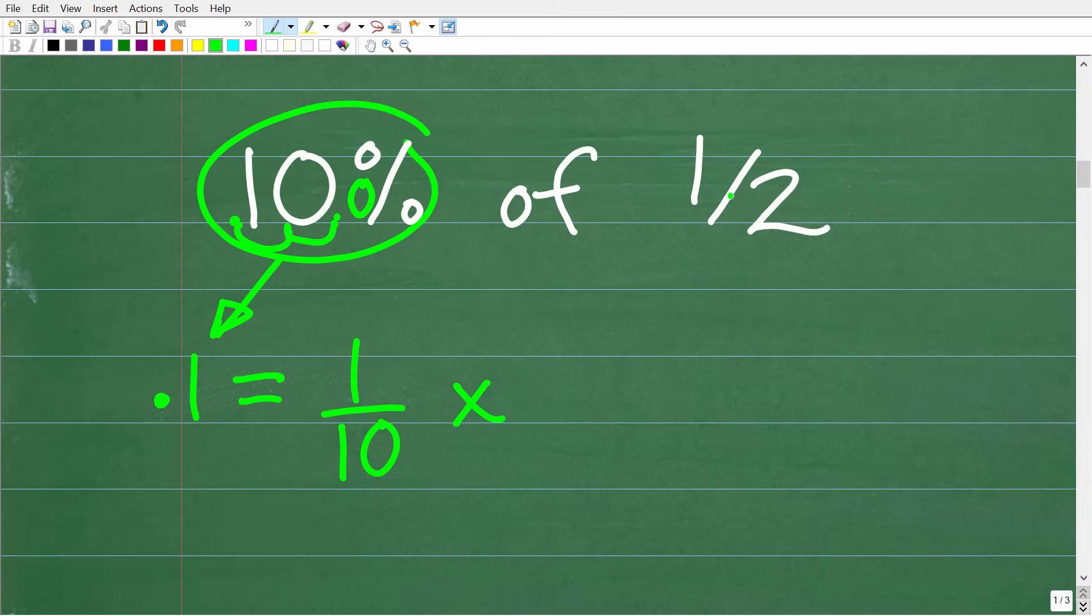Now if we multiply this 1 tenth by 1 half, we're going to get what? Well, the way you multiply fractions is you multiply the respective numerators. So 1 times 1 is 1 over the respective denominators. 10 times 2 is 20. So 1 twentieth is the correct answer. And if you take 1 and divide it by 20, it will get the decimal 0.05.